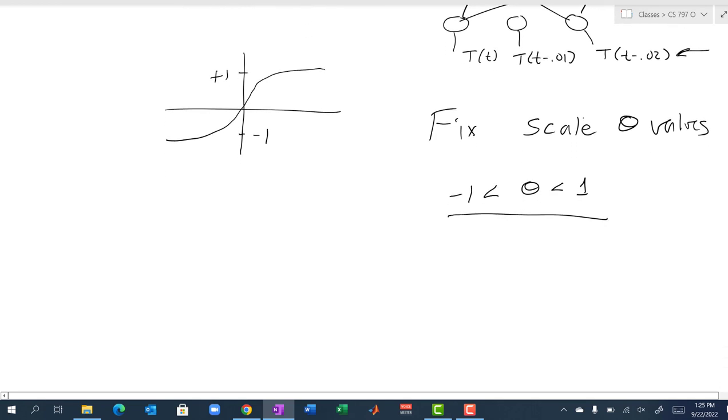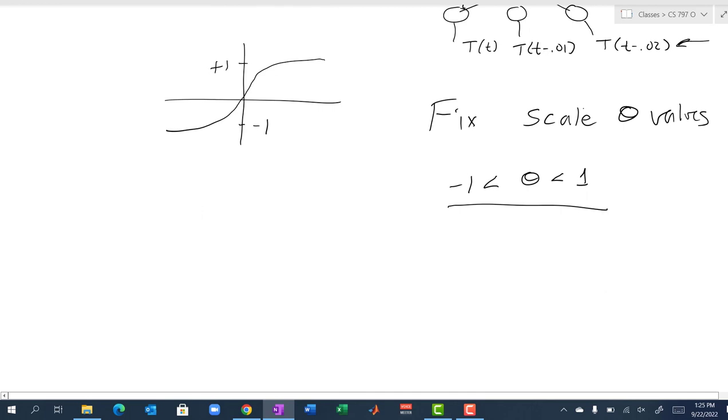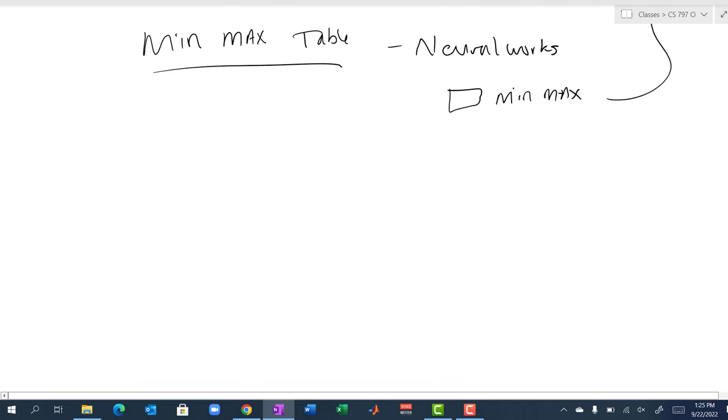The software that we'll be using, NeuralWorks, does this automatically with something called the min-max table. As you watch the lecture for NeuralWorks, I'll talk about checking a box that tells it to use min-max data, and what that does is it does the scaling for you. So that's why you would scale output data.